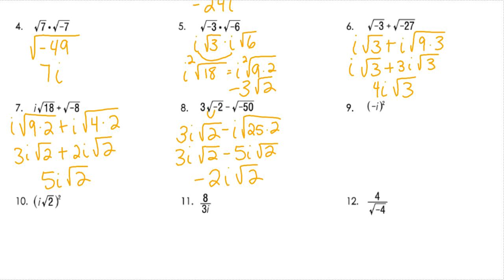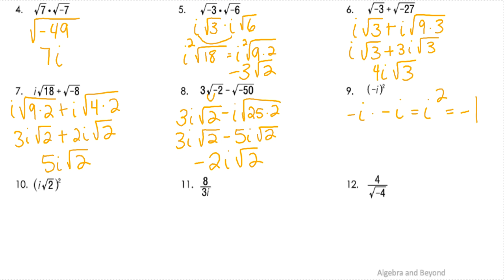Number 9 — negative i squared. So that would be negative i times negative i. Remember that negative times negative is positive, and i times i is i squared. We know that i squared is negative 1. For number 10, I've got i squared when I distribute that squared, and then the square root of 2 times the square root of 2. i squared is negative 1, and the square root of 2 times the square root of 2 is just 2. So when I simplify that, I get negative 2.